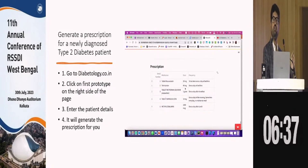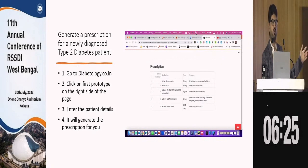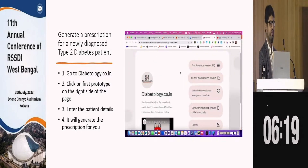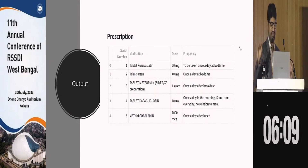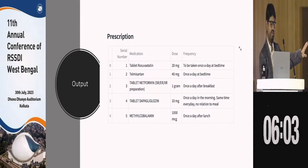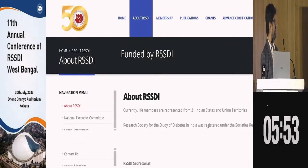It tells you why each treatment component is recommended — why you would give rosuvastatin, why telmisartan, and so on. It generates the prescription in real time. The recommendation is: rosuvastatin, telmisartan, metformin, dapagliflozin, B12 — most of us would agree with that. This is funded by a small research grant from RSSTI, West Bengal Chapter.